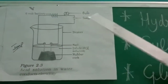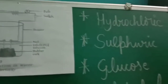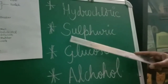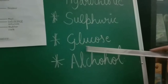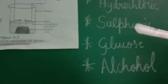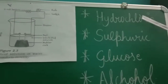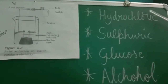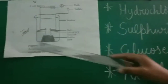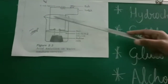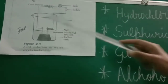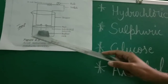For this experiment, I am going to take four different solutions: one is hydrochloric acid, one is sulfuric acid, one is glucose, and one more is alcohol. First let us take hydrochloric acid for our experiment. This is a beaker — whatever you can see, this cup, this is a beaker. And now I am going to pour this hydrochloric acid inside this beaker.